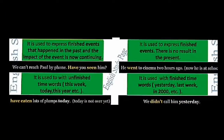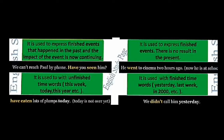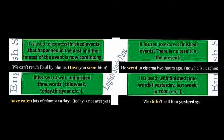अब next देखते हैं — इस use को पिछले वीडियो में बताया था जब Present Perfect पढ़ाया था। उसमें हम लोग उसका use ऐसे काम के लिए करते हैं जो finished हो चुका हो लेकिन उसका impact अभी तक दिख रहा हो। तो वहाँ पर Present Perfect tense का use करते हैं। जैसे example: 'We can't reach Paul by phone, have you seen him?' — मैं Paul तक नहीं पहुँच पा रहा हूँ, क्या तुमने उसे देखा है? तो 'देखा है' — इसलिए Present Perfect tense का use करेंगे।